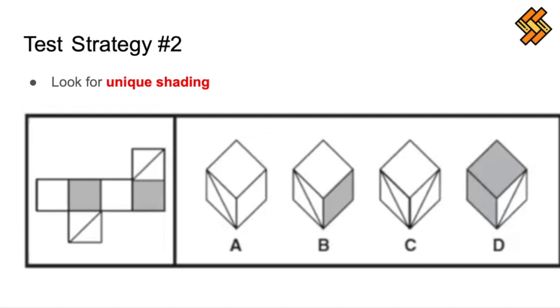For figures that instead have unique shading, the strategy will be to focus on the unique shading. In this example, in the flat pattern, we can see there is an unshaded, shaded, unshaded, shaded pattern. Process of elimination will again be a very useful strategy here. We can eliminate A because there are two unshaded sides next to each other and we could also eliminate D because there are two shaded sides next to each other. Both of these would not be possible because we know from the flat figure there is the alternating shaded and unshaded pattern. This leaves B and C as our two possible answers.